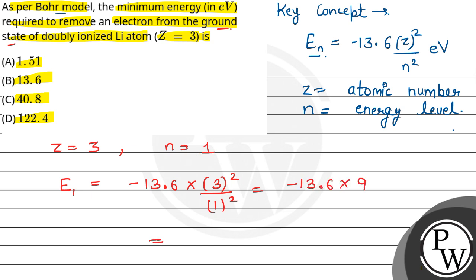This gives E₁ = −122.4 electron volts. This is the energy of the lithium atom in the ground state, and the minimum energy required to remove the electron is 122.4 eV. This matches option D, so option D is the correct answer.